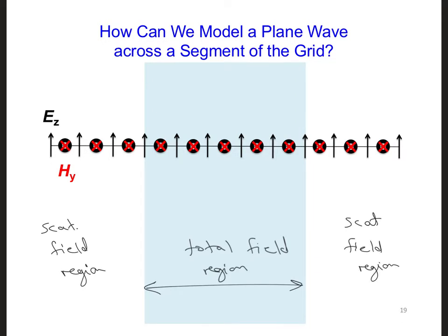Now I arbitrarily put an EZ component right at the interface between the total and scattered field regions. We could have also chosen an HY component to be at the interface. It really doesn't matter.